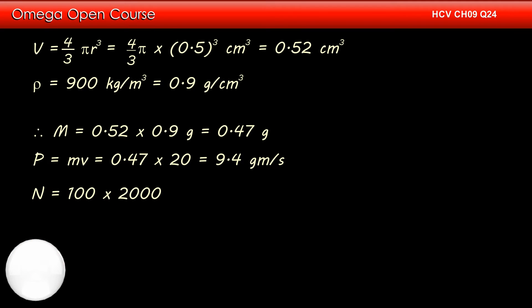The area of roof is 10 × 10 or 100 m². Since 2000 hailstones strike every square meter area each second, number of hailstones striking the roof each second is 100 × 2000 or 200,000.